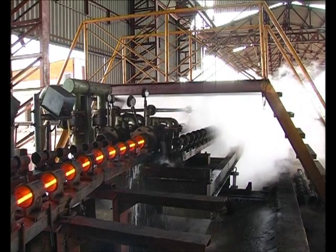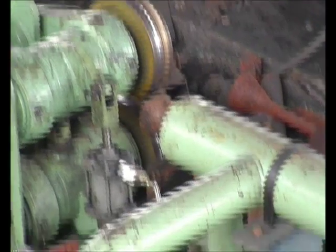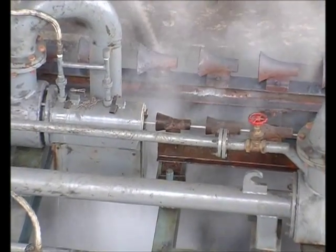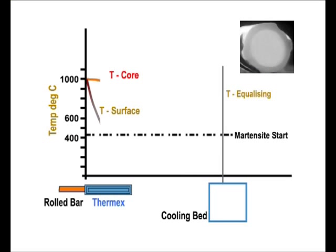A short, intensive but very precise inline cooling is imparted to the rolled bar as it passes through the specially designed Thermex cooling pipes. This affects the periphery of the bar only, whereas the core is largely unaffected.